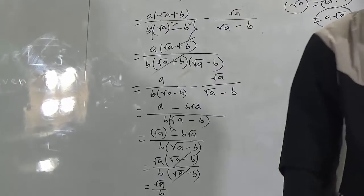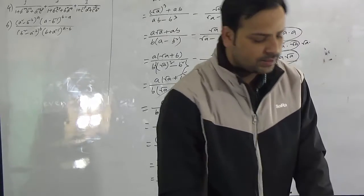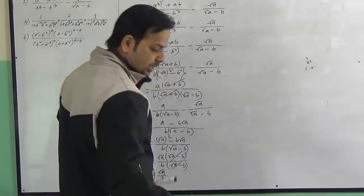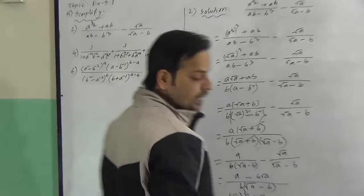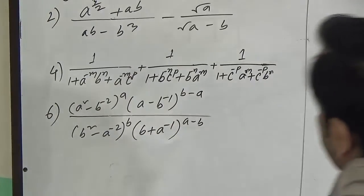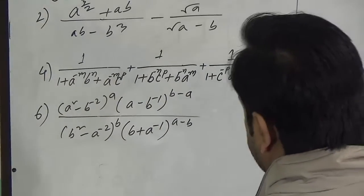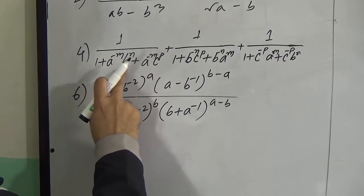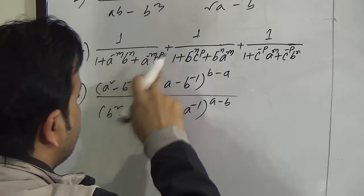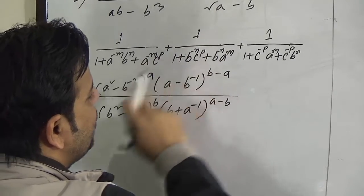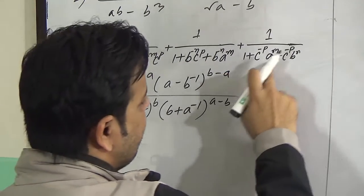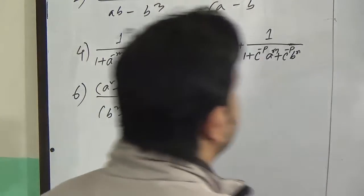Dear students, I hope you have understood how to solve the first one. Now I am going to solve question 4. The second question is: 1 by 1 plus a to the power minus m times b to the power n plus a to the power minus m times c to the power p, plus 1 by 1 plus b to the power minus n times a to the power m plus b to the power minus n times c to the power p, plus 1 by 1 plus c to the power minus p times a to the power m plus c to the power minus p times b to the power n.